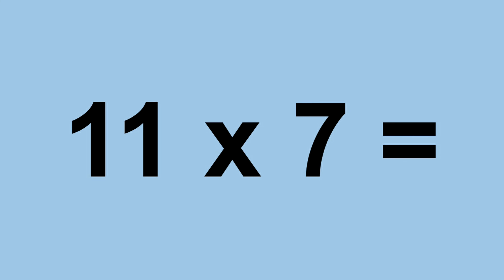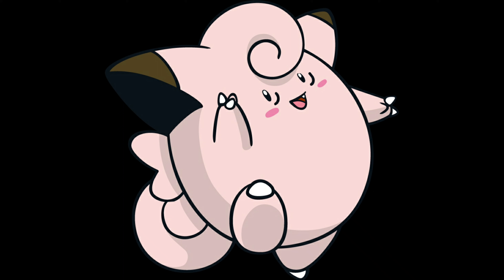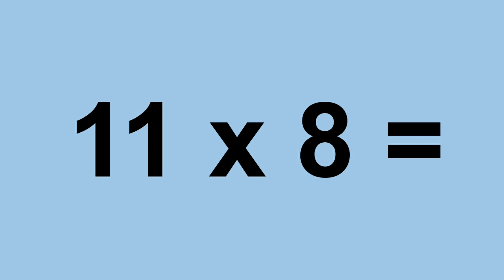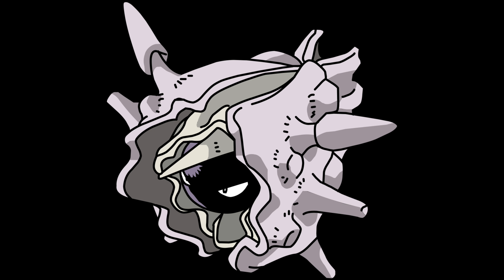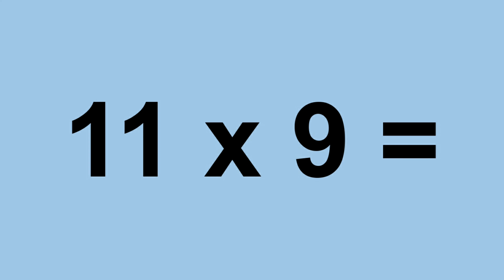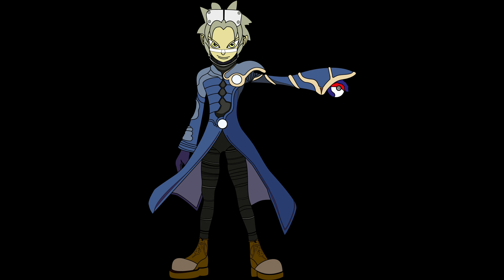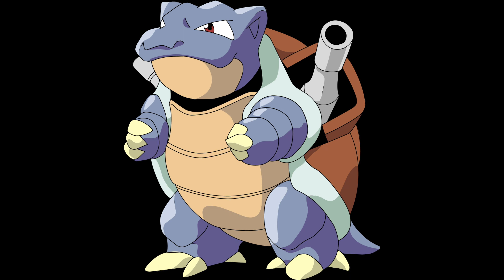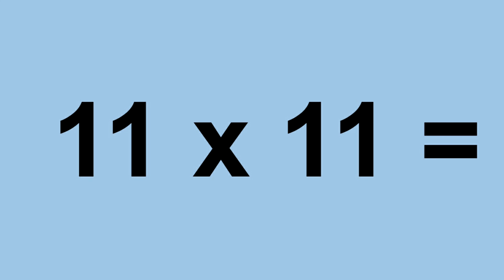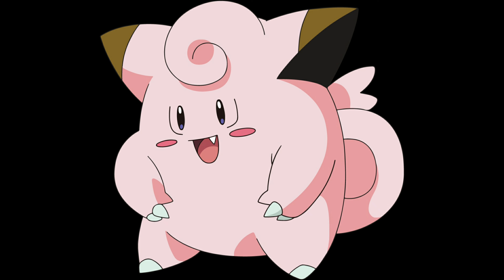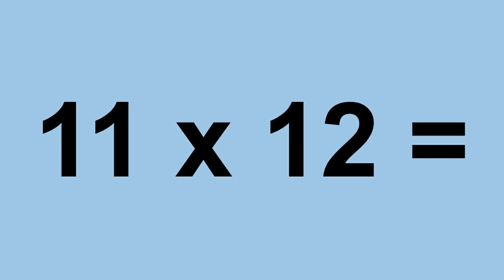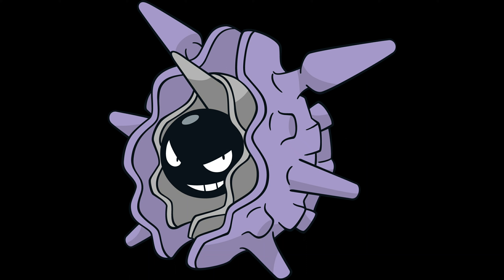Eleven times seven equals seventy-seven. Eleven times eight equals eighty-eight. Eleven times nine equals ninety-nine. Eleven times ten equals one hundred and ten. Eleven times eleven equals one hundred and twenty-one. Eleven times twelve equals one hundred and thirty-two.